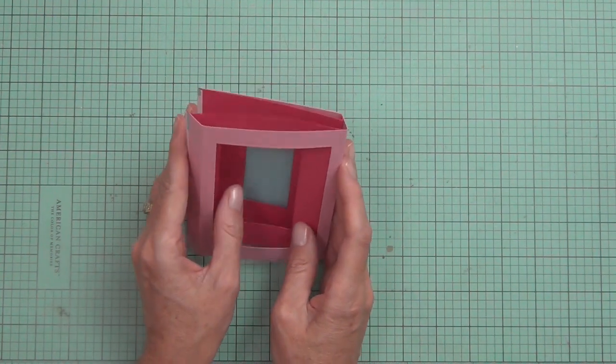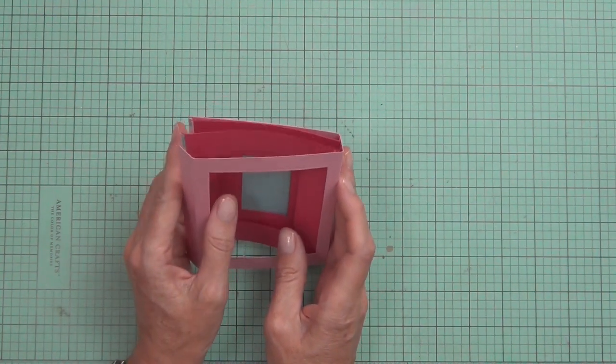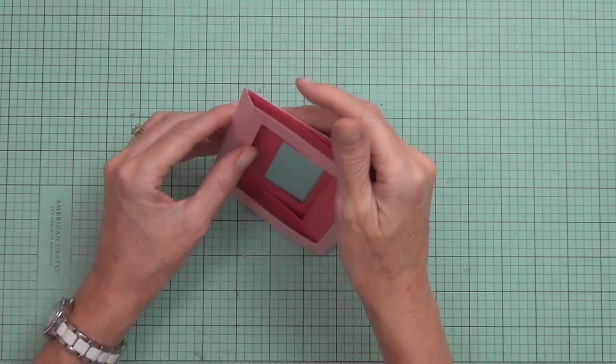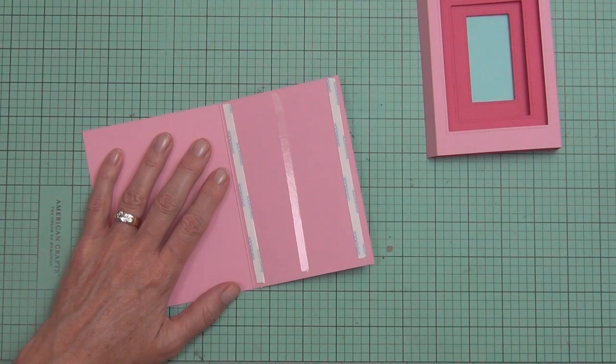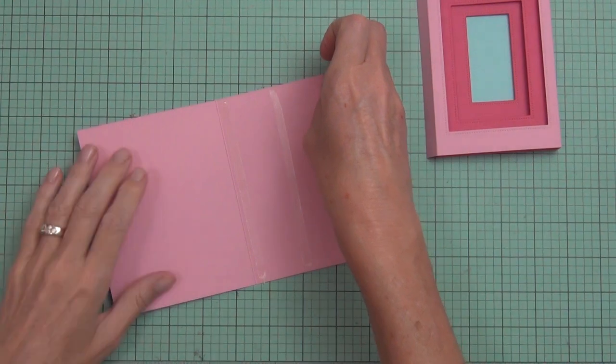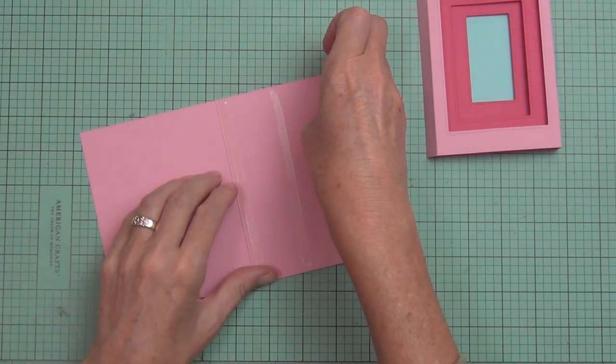I'm doing the same thing again. I am removing the release paper from the adhesive and then just folding on top so that it now has a really strong hold. You can see that there's now three layers. Now I'm going to attach the whole panel to the card base that I created earlier. This is the one that has that little piece cut off the back of it.